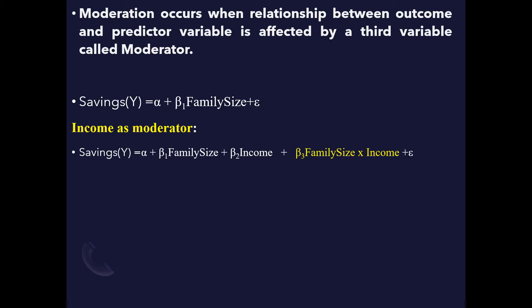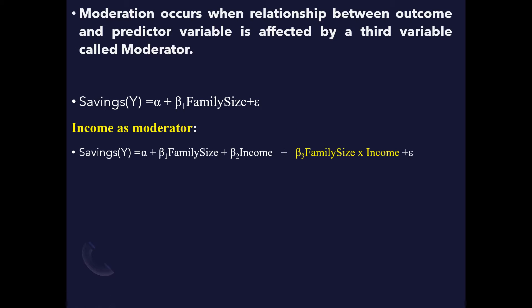If we look at the first equation, we would like to see whether savings is affected by family size — this is a simple linear regression form. Now if we believe that the relationship between saving and family size is affected by income, then we can consider income as a moderator.